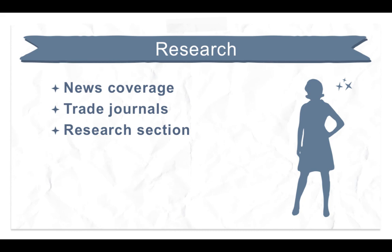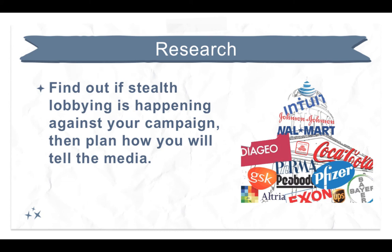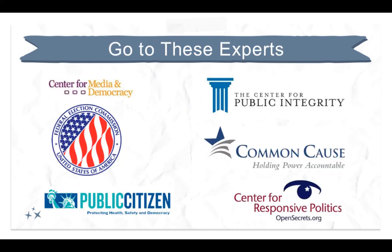Begin your research by reading news coverage of your issue and the trade publications that cover the industries involved. If a friendly policymaker tells you she's getting calls and letters from constituents opposing your position, ask the policymaker to inquire with those constituents about where they got their information and what motivated them to contact that office. You may learn that stealth lobbying was behind those calls and letters, which would be a good basis for a news story. Check out organizations that keep track of what corporations spend on lobbying and donations made to political campaigns — some examples are the Center for Media and Democracy, the Federal Election Commission, Common Cause, Center for Public Integrity, Center for Responsive Politics, and Public Citizen.